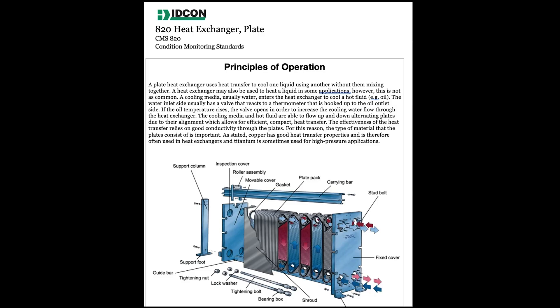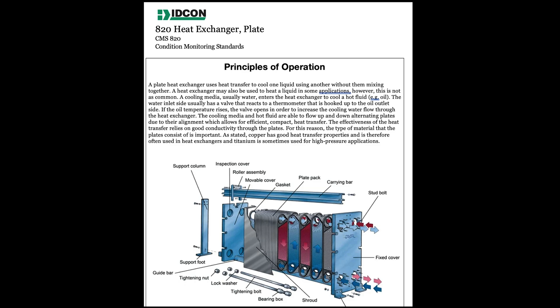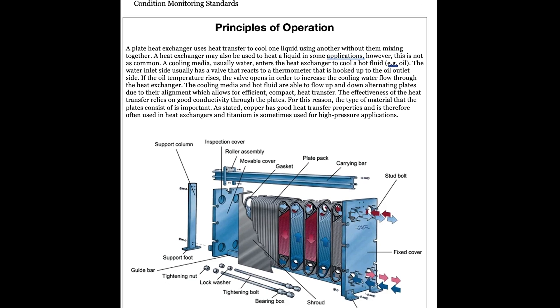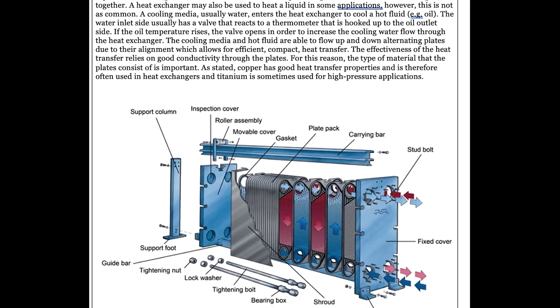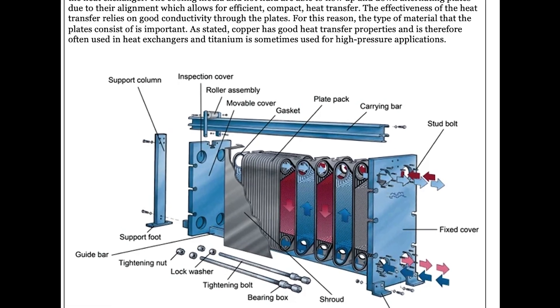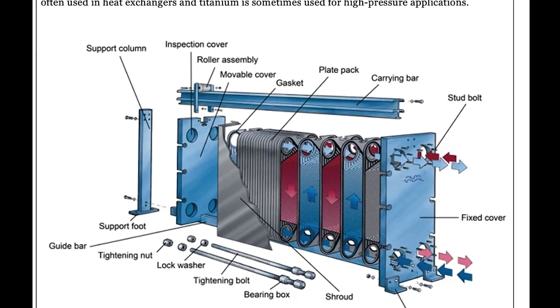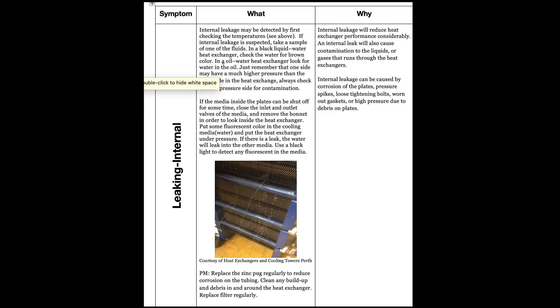Here we have an example of our condition monitoring standard for a plate heat exchanger. As you can see, we introduced the equipment with our principles of operation, as well as a picture to help the reader understand the function and basic mechanics of the equipment if they are not familiar. We go on to see our first symptom mode for this component — internal leakage. In the 'what' column, we describe the inspection methods that should be used to check for irregularities in the symptom mode. We also explain the preventative maintenance that should be done to prevent the failure modes which cause the symptom to develop.